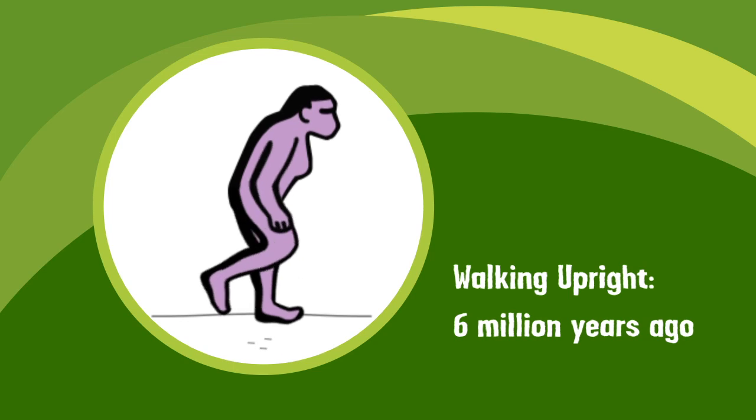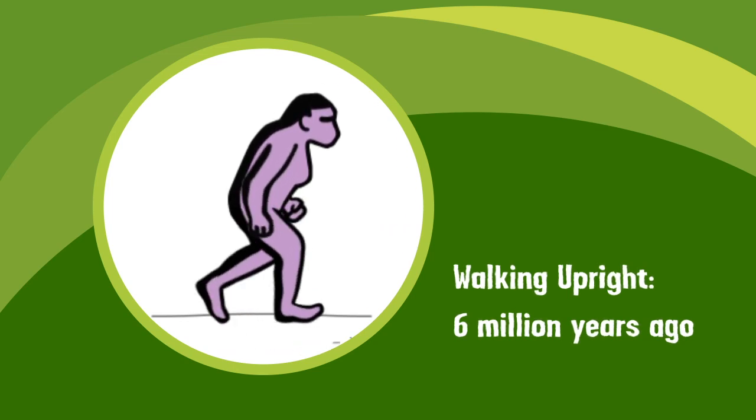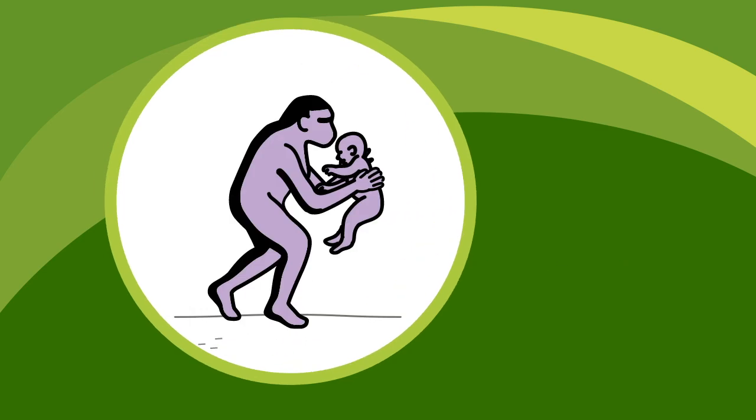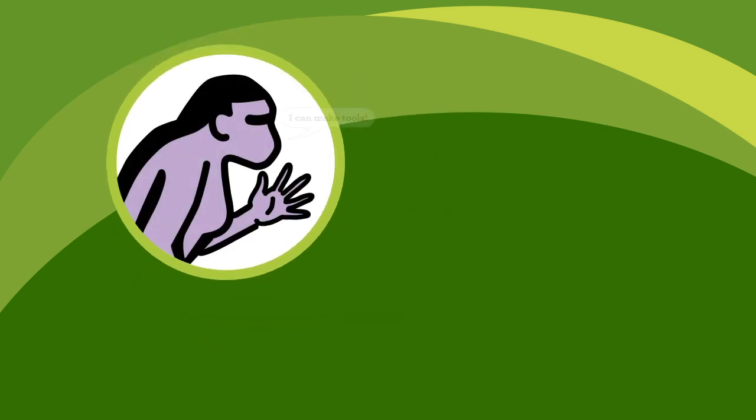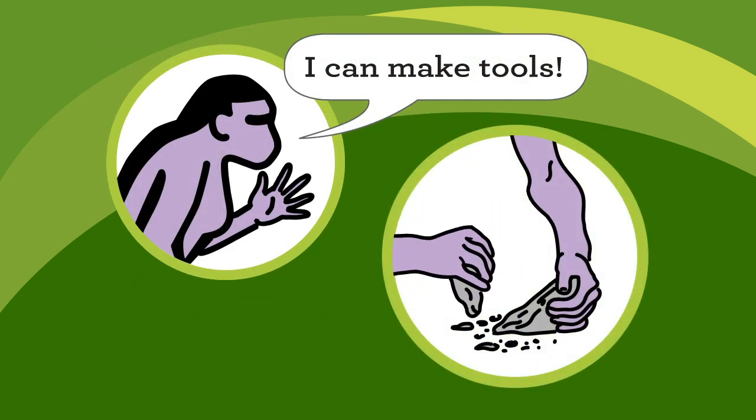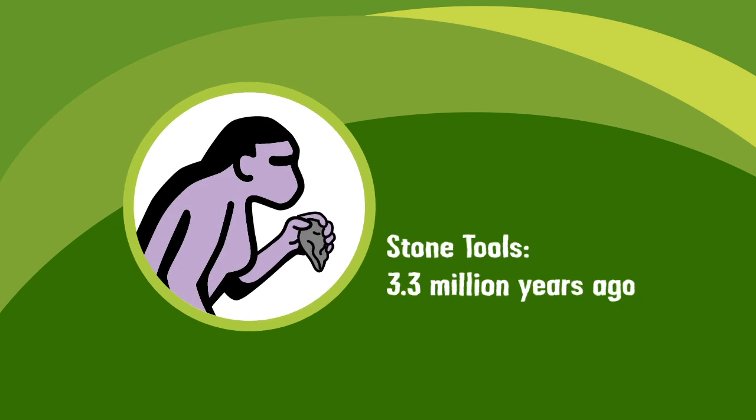Early humans started walking on two feet around six million years ago. Standing upright freed our hands. I can hold babies. I can throw stuff. I can make tools. Early humans began making stone tools around 3.3 million years ago.